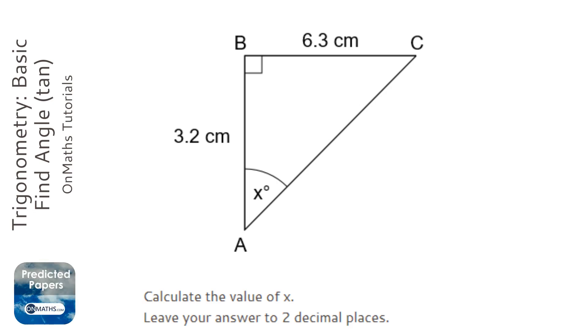The first step of trigonometry is to mark the lengths. Go across from the right angle—that's your hypotenuse. Go across from the marked angle—that's the opposite. The one left over is the adjacent, which is also between the right angle and the marked angle.